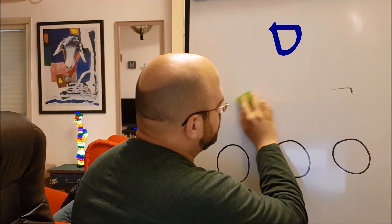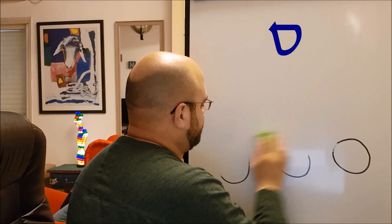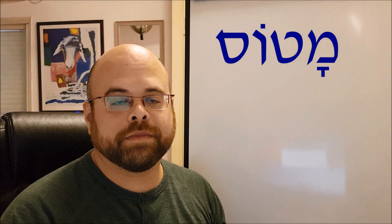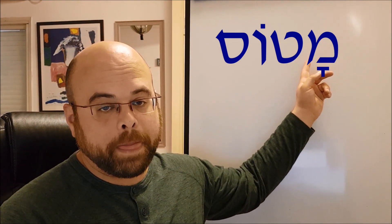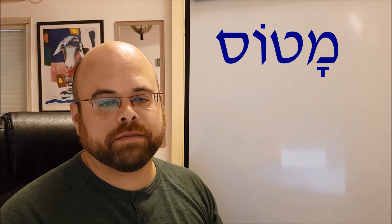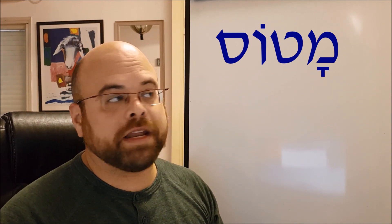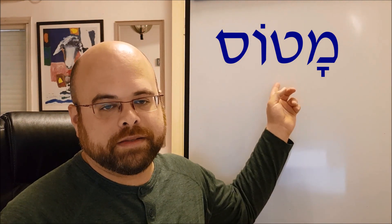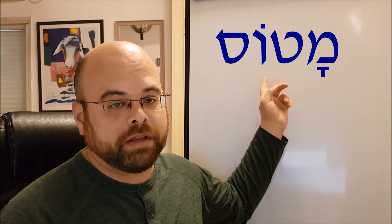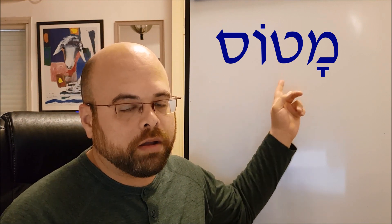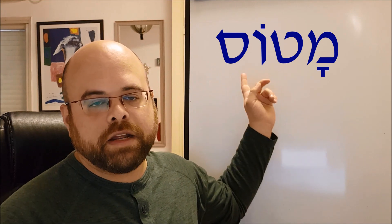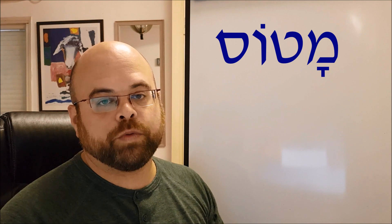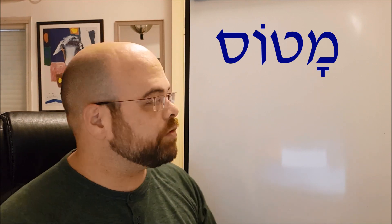with these letters, with the SAMECH and TET. This word is MATOS. We have the letter MEM M with the KAMATS so it's MA, and then the letter TET with the sound O because it's VAV with a dot above it, so it's TO—MA TO—and then the